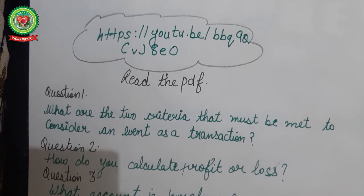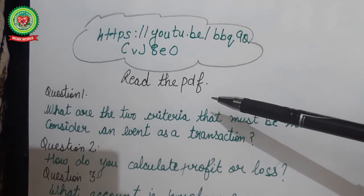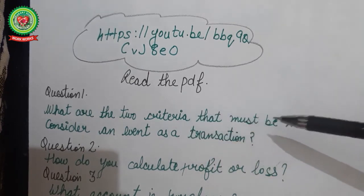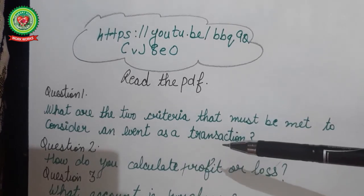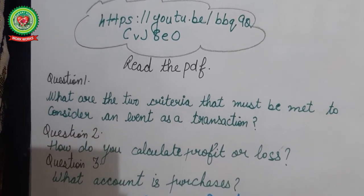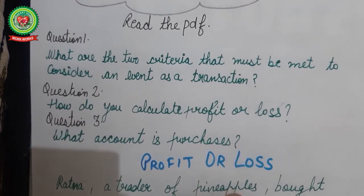These were the accounting terms we discussed today. The remaining accounting terms will be discussed tomorrow. For clarity of concepts, follow the given link and read the PDF sent for your chapter. Answer the following questions: What are the two criteria that must be met to consider an event as a transaction? How do you calculate profit or loss? What account is purchases?